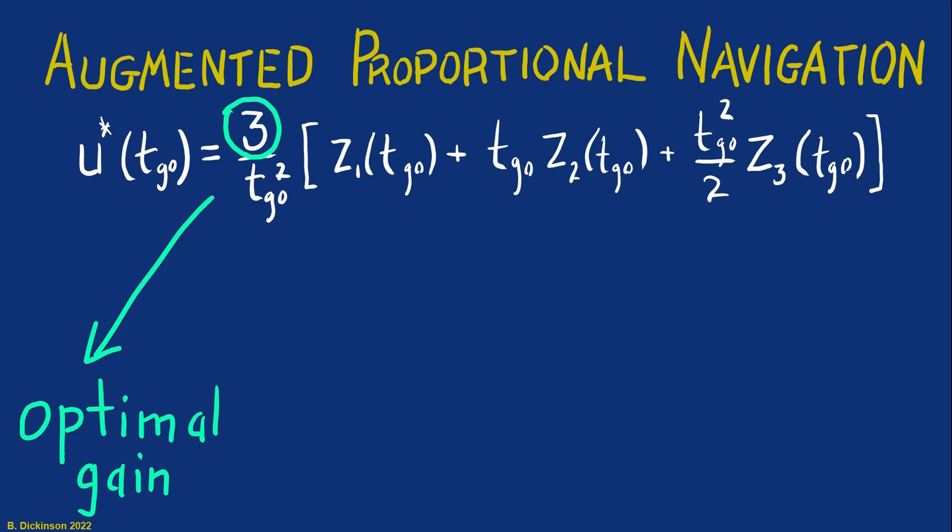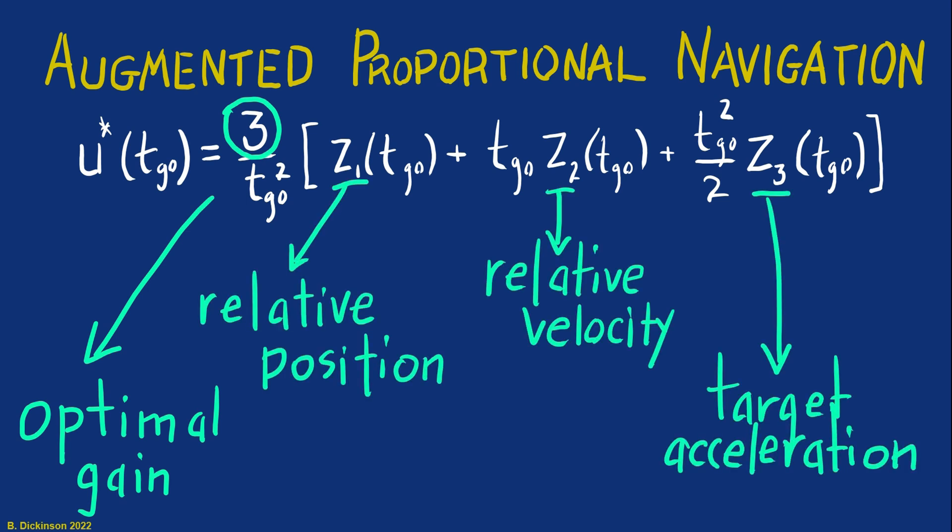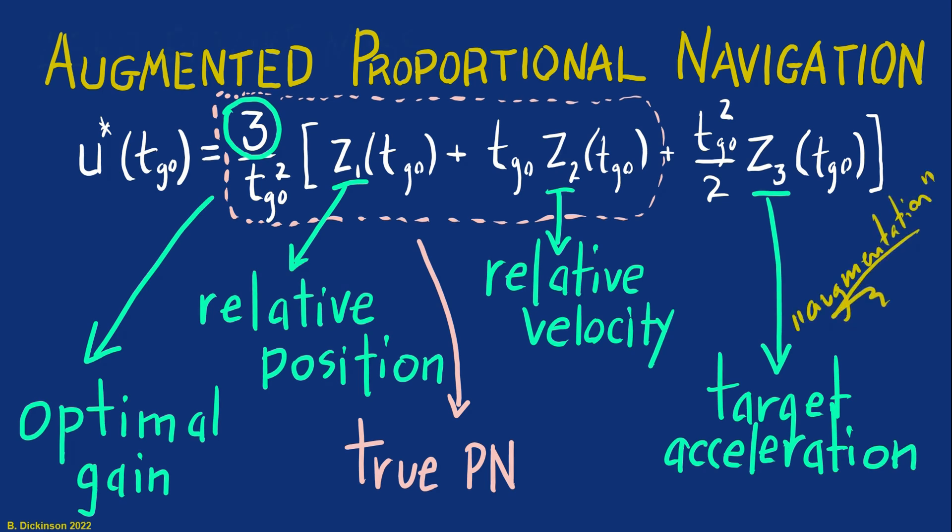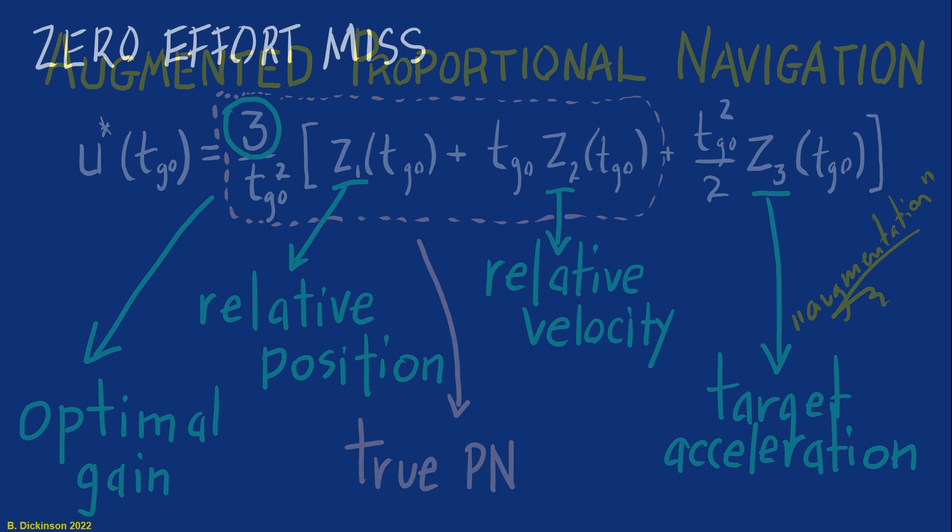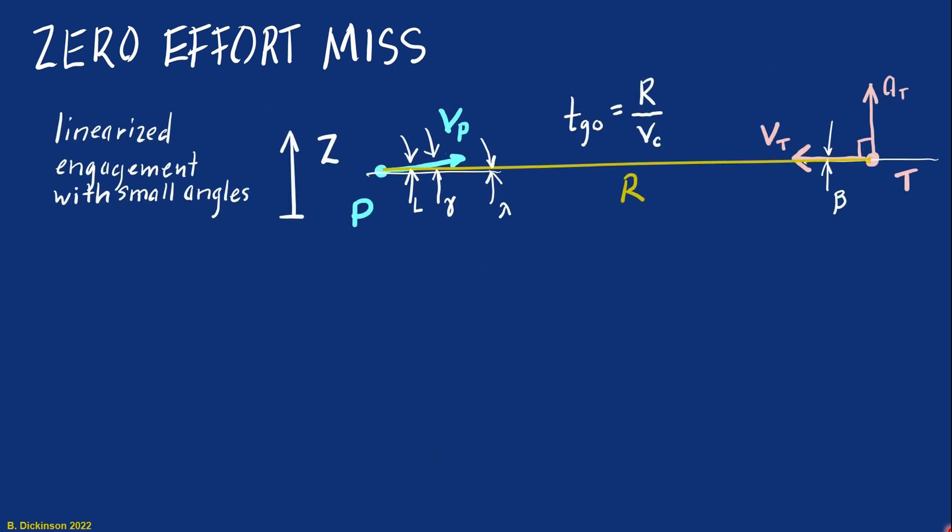It has an optimal gain of three. We have a relative position, relative velocity, target acceleration. And look at what the first two terms are. They're exactly what we had in section one. It's simply true proportional navigation that's been augmented by a third term.